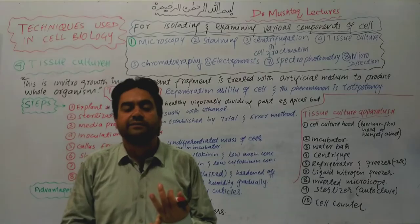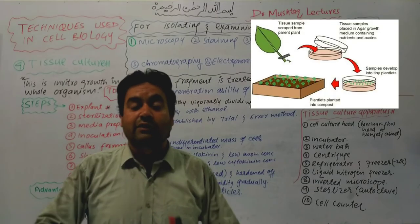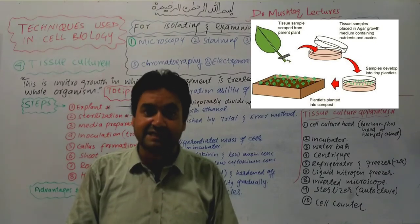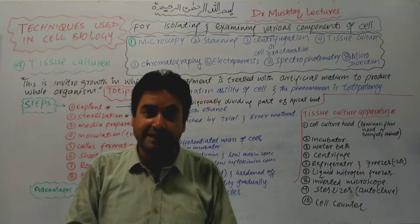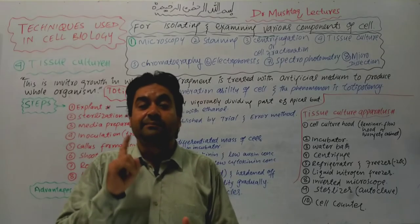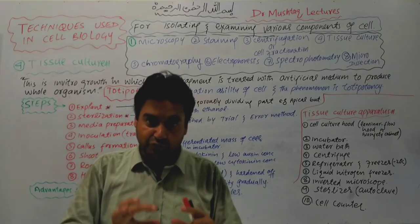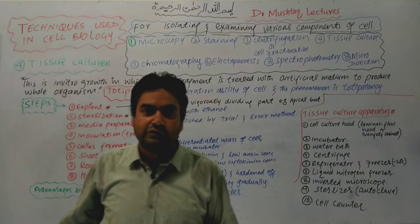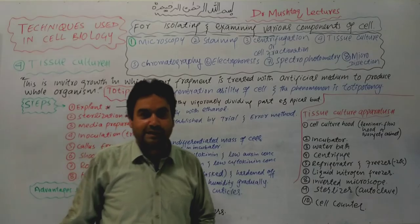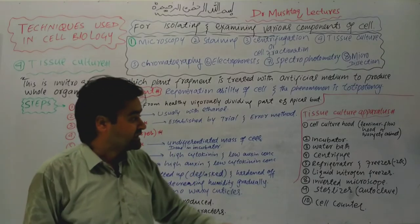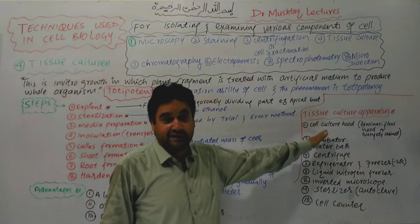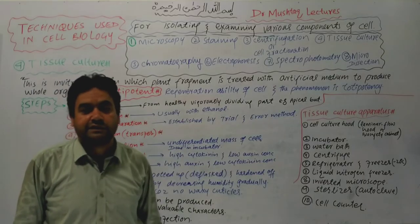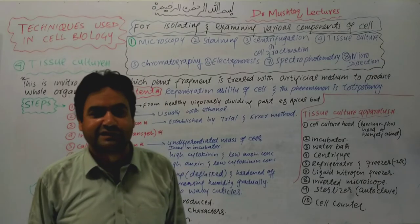In summary, tissue culture produces a whole organism from a plant fragment. The key steps are: explant selection, sterilization, media preparation, inoculation, callus formation, shoot and root development, and finally hardening. Tissue culture is used to produce desirable qualities in plants rapidly and in large quantities. Allah Hafiz.